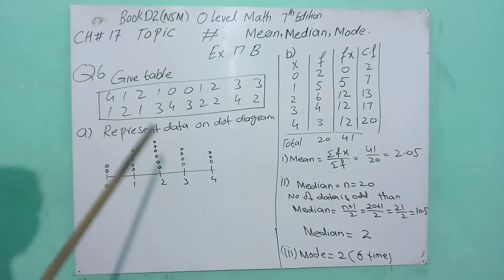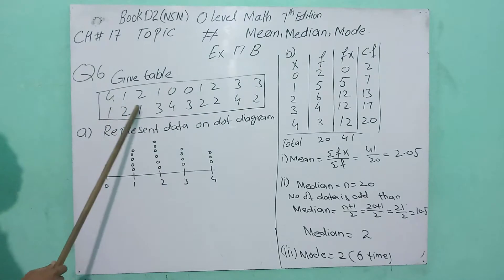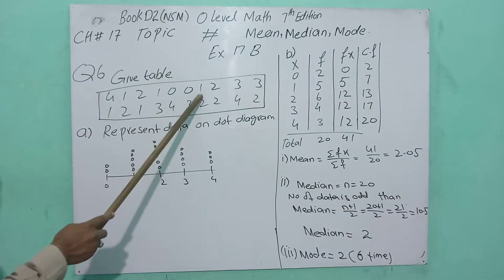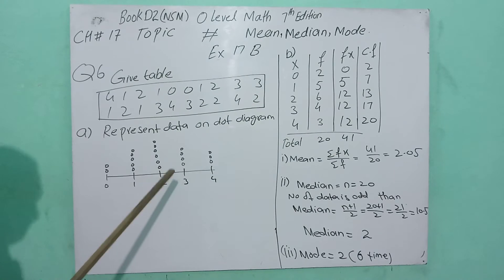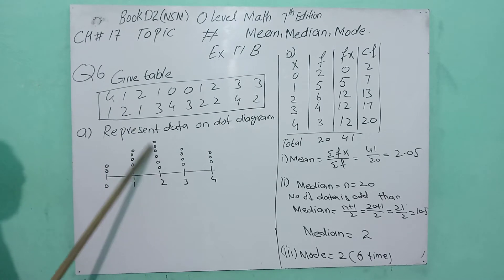Given table: 1, 2, 1, 0, 1, 2, 3, 3, 1, 2, 1, 3, 4, 3, 2, 2, 4, 4. Part A: Represent data on a dot diagram. The smallest number is 0, the biggest number is 4. Then 0, 1, 2, 3, 4. This is a dot diagram. Zero appears two times, one is five times, two is six times, three is four times, four is three times. First part is complete.